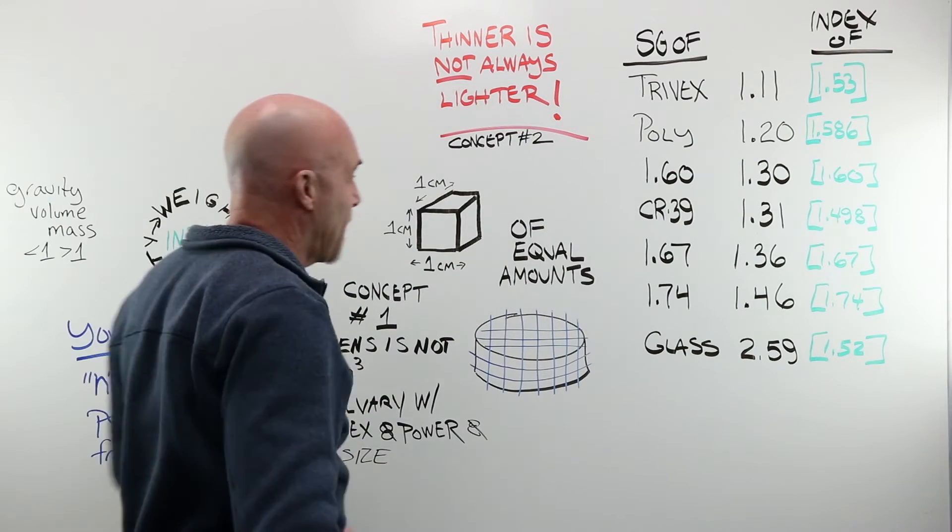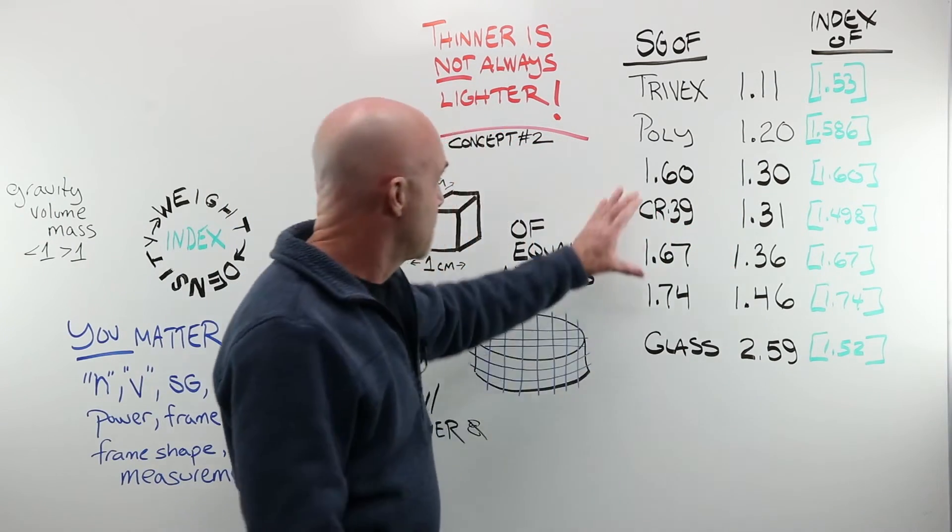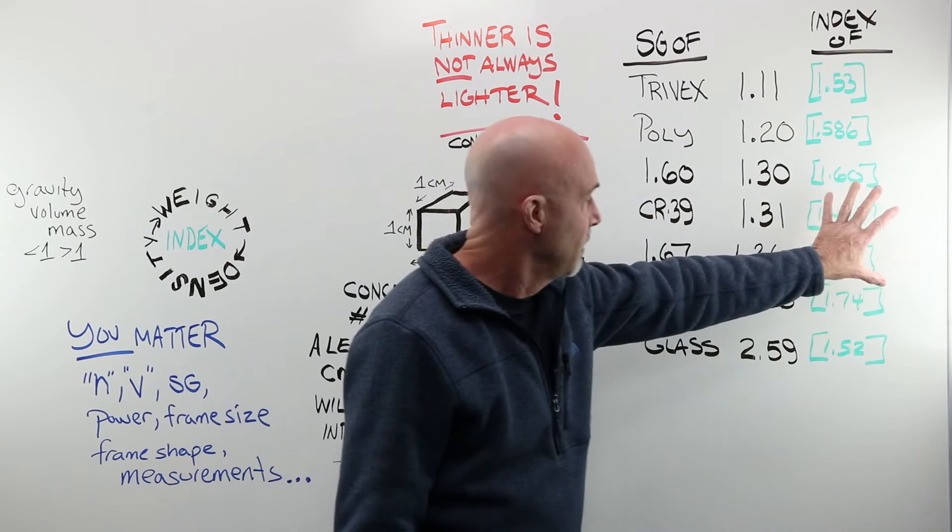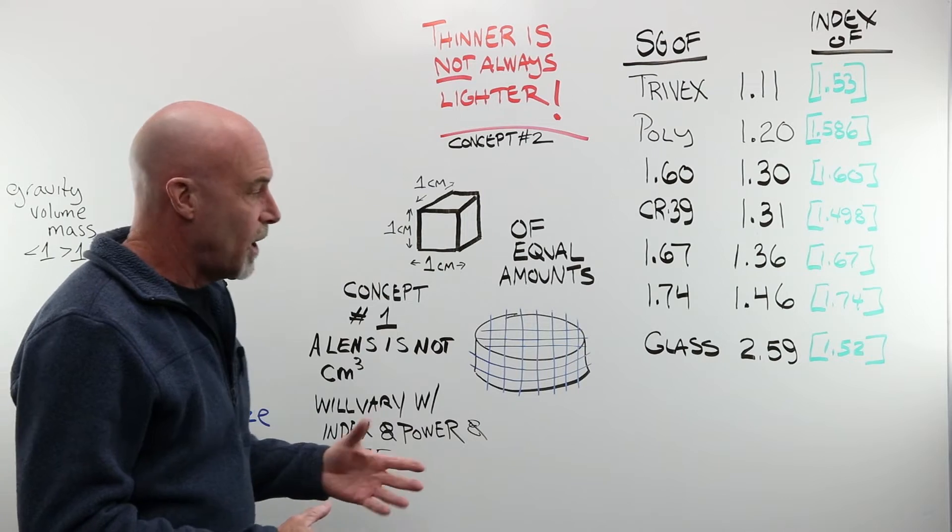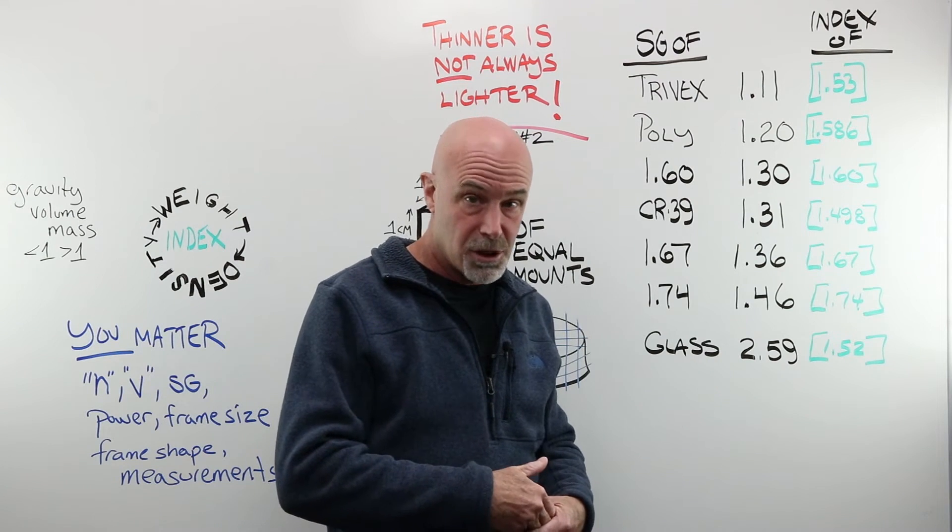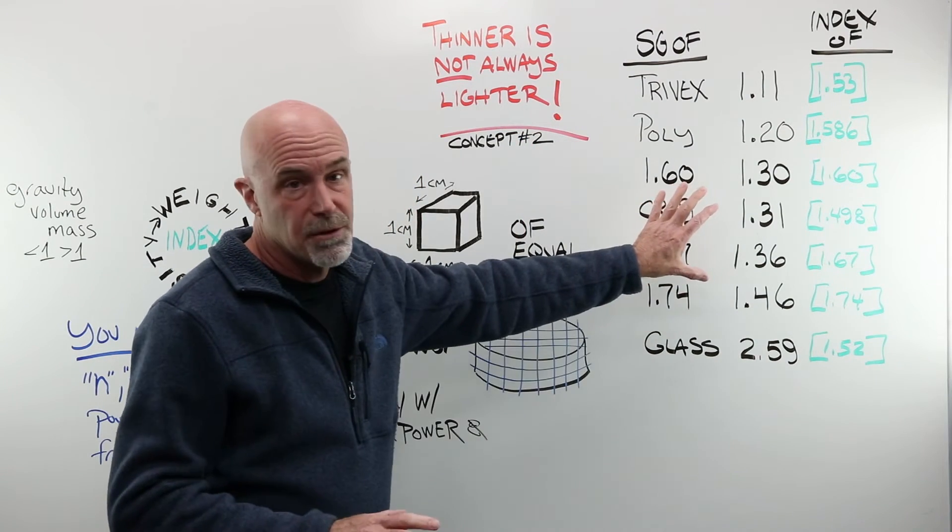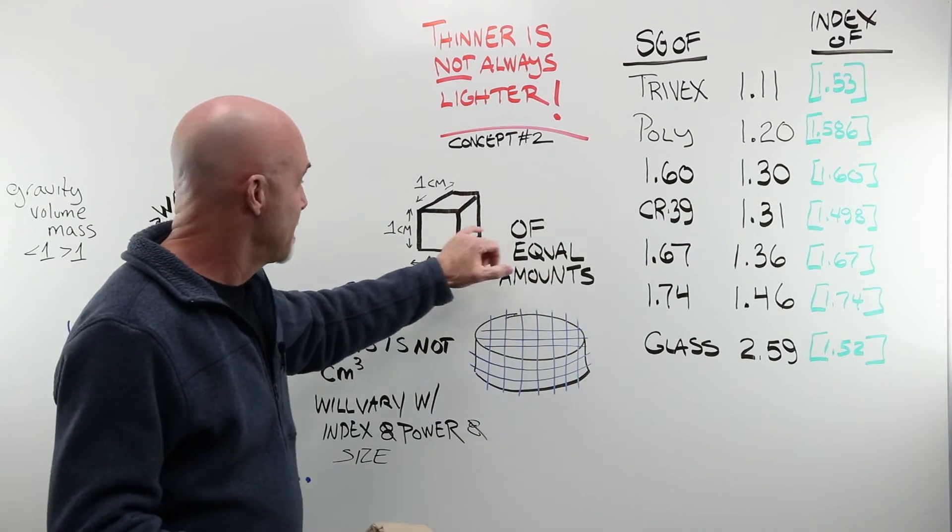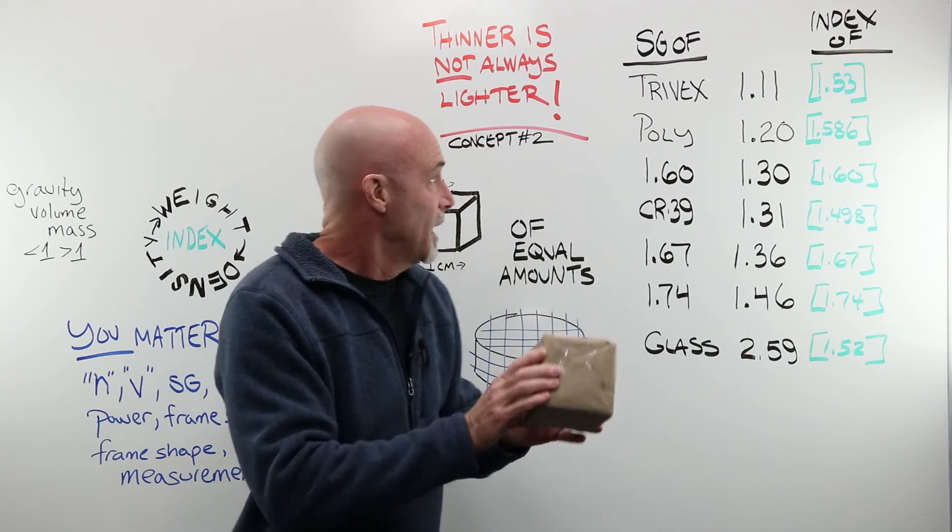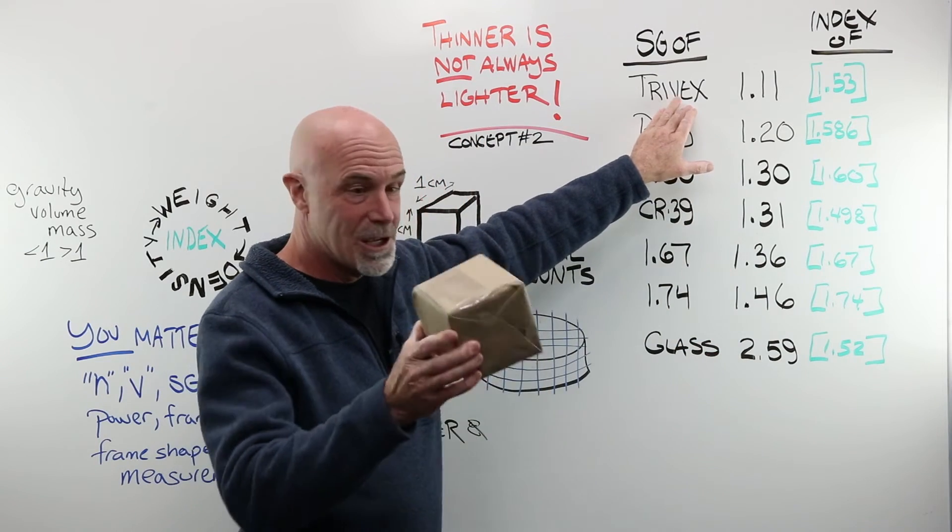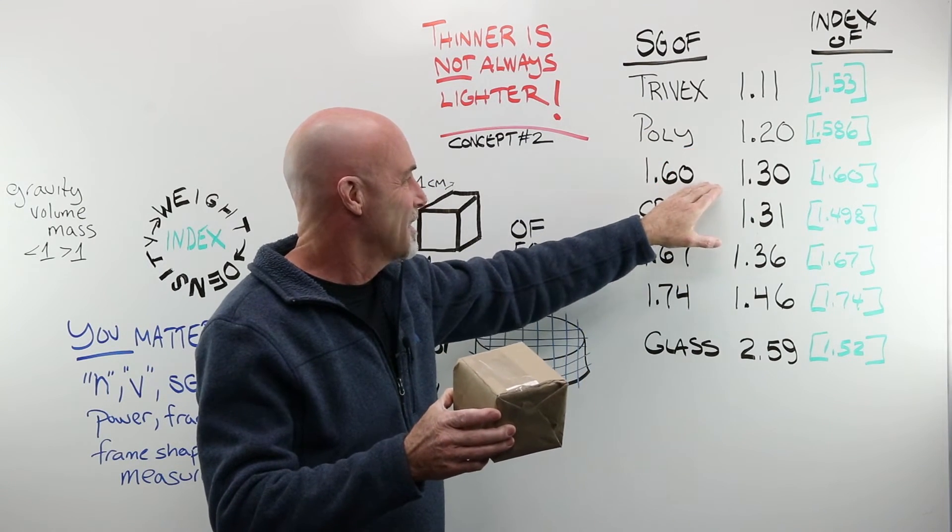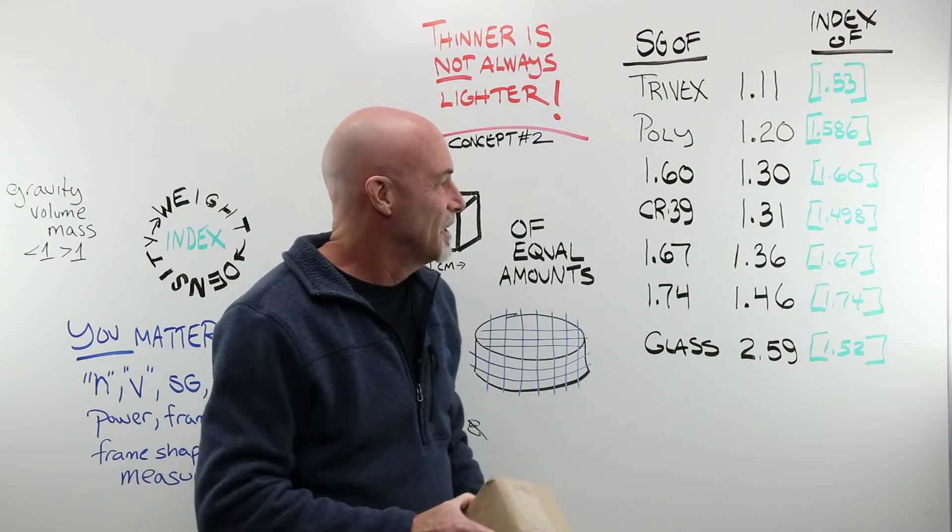From there, we simply have a chart of the seven common materials that we use for lenses. There is the specific gravity. There is the index. Now, what can we take away? Why do lens manufacturers put a specific gravity on their lens spec sheets? All that we can take away from this is that it is of a specific amount of a material. Here's my cubic centimeter. All I can take away from these numbers is that a cubic centimeter of TRIVEX weighs less than a cubic centimeter of poly. Poly less than 160. CR39 less than 167 down the line.